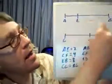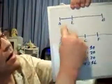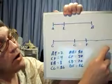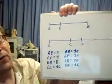For let the number AB be that part of the number CD which AE subtracted is of CF subtracted. So AB is in the same ratio to CD as AE is to CF — that's what Euclid is saying. I say the remainder EB is also the same part of the remainder FD.